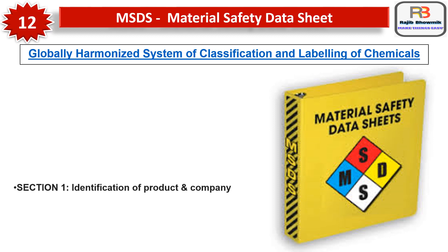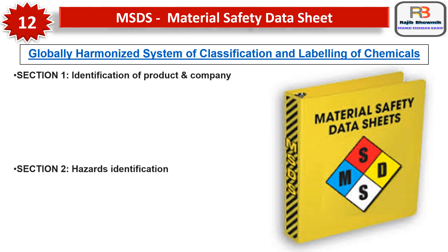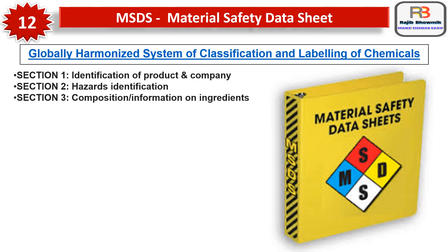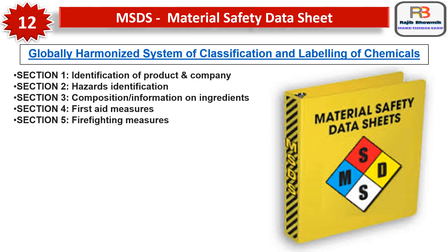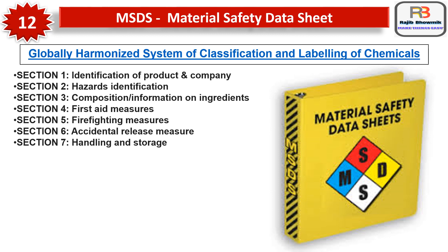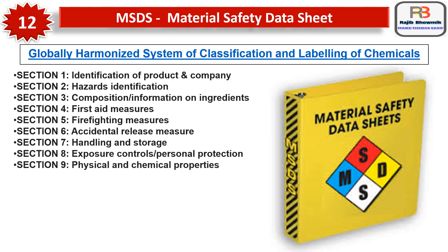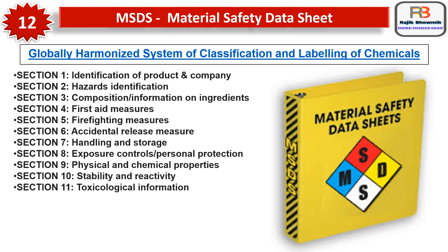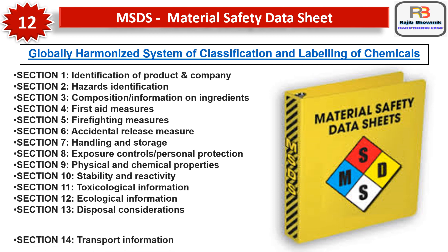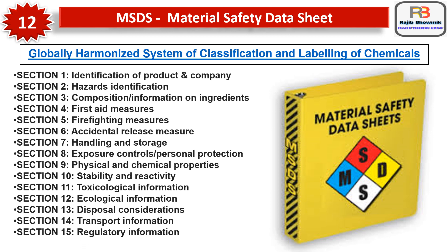The 16 sections of MSDS are: 1. Identification of Product and Company, 2. Hazards Identification, 3. Composition and Information on Ingredients, 4. First Aid Measures, 5. Firefighting Measures, 6. Accidental Release Measures, 7. Handling and Storage, 8. Exposure Control and Personal Protection, 9. Physical and Chemical Properties, 10. Stability and Reactivity, 11. Toxicological Information, 12. Ecological Information, 13. Disposal Considerations, 14. Transport Information, 15. Regulatory Information, 16. Other Information.